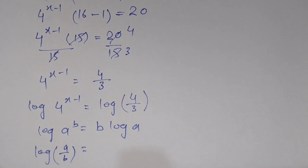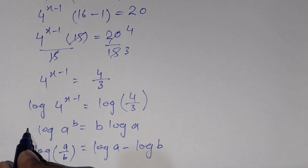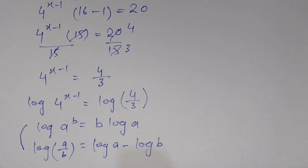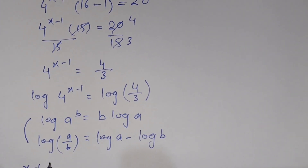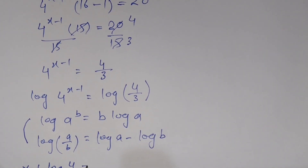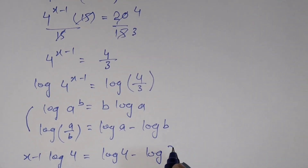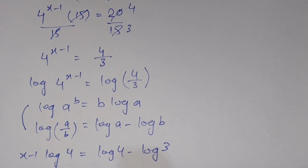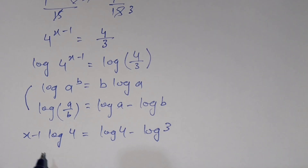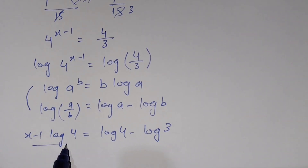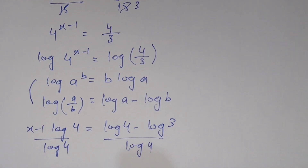For the right side: log of a/b can be written as log of a minus log of b. Using both these formulas, the equation becomes: (x-1) times log 4 equals log 4 minus log 3.